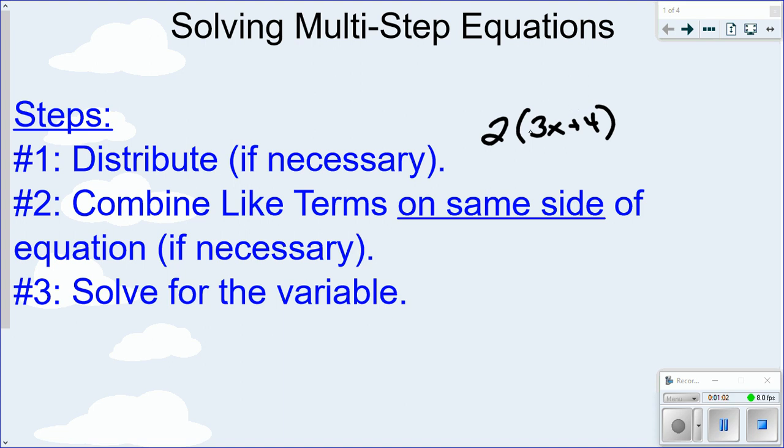If that's not involved, then go ahead on to step two. And step two is to combine like terms on the same side of the equation, if necessary. So there might not be any like terms to combine at all. So you could have something like 2x plus 4 plus 3x equals 10. So this has like terms that you can combine together to make this 5x plus 4 equals 10.